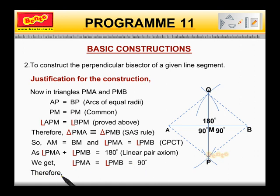Therefore, PM, that is, PMQ is the perpendicular bisector of AB.